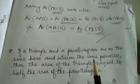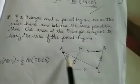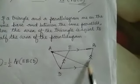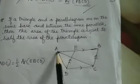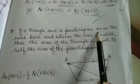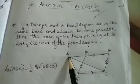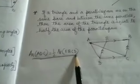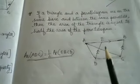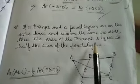An important point: triangle ADC and parallelogram ABCD have the same base DC and are between the same parallels. The area of a triangle is half the area of a parallelogram on the same base and between the same parallels. So area of triangle ADC equals half the area of parallelogram ABCD. Please memorize this — we will use it in exercise 9.2.